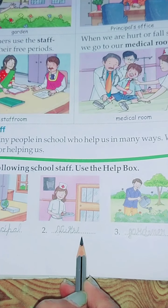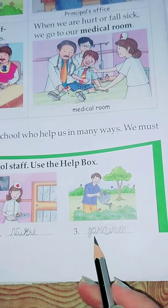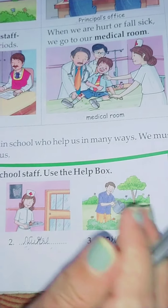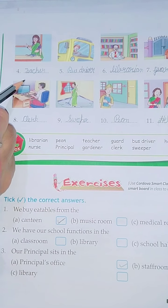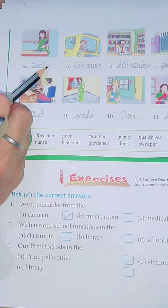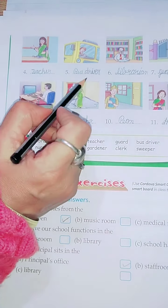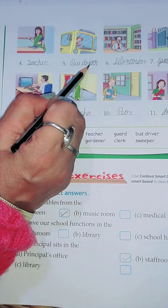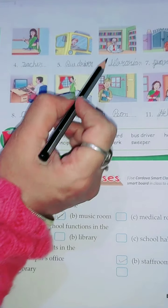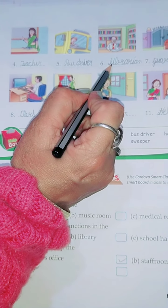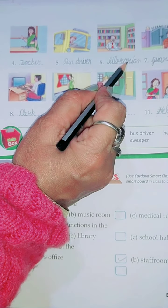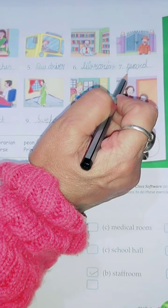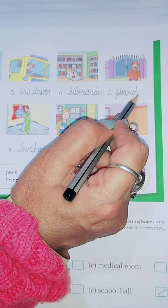The third picture is of the gardener — G-A-R-D-E-N-E-R. The fourth picture is of the teacher — T-E-A-C-H-E-R. Next is bus driver — B-U-S D-R-I-V-E-R. The sixth is librarian — L-I-B-R-A-R-I-A-N. The seventh is guard — G-U-A-R-D.